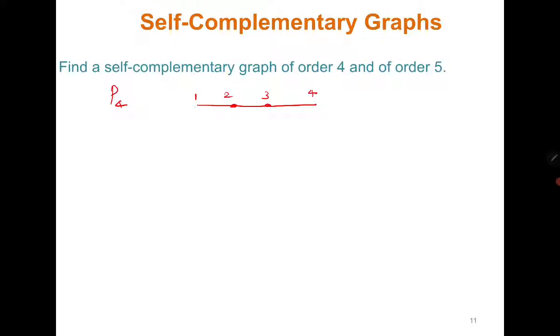So its complement: 1 is adjacent to 2 therefore 1 must be adjacent to 3 and 4 because it is not adjacent here. This is P4 complement. 2 is adjacent to 1, 3 therefore 2 must be adjacent to 4. 3 must be adjacent to 1 and 4 must be adjacent to 1 and 2. So you can see that if this is P4, then its complement is also P4. It is self-complementary. Similarly if you try C5, you will find that its complement is also C5. So P4 and C5 are self-complementary graphs. You can try other examples.